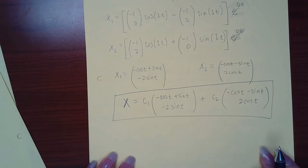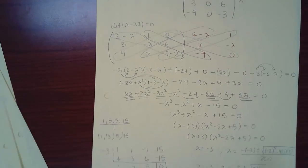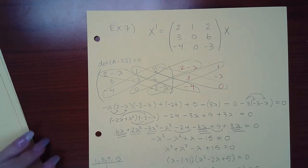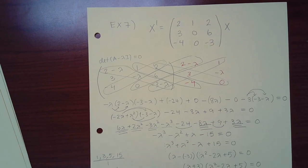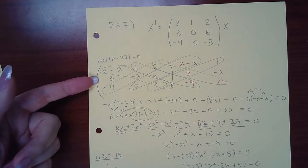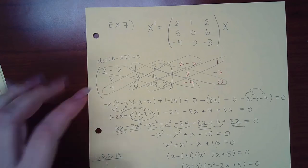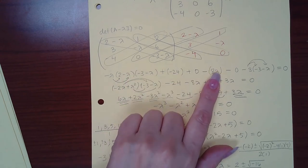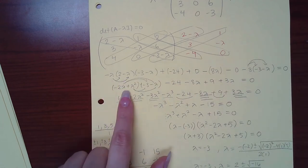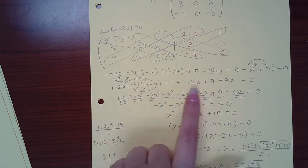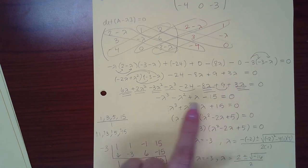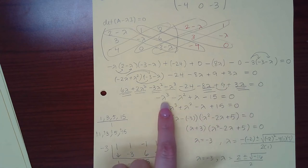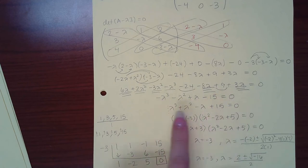The last example was the most difficult because a lot was happening. We compute the determinant of A minus lambda·I and multiply everything out since there are no common factors. After distributing and combining like terms, we get a cubic polynomial with a negative leading coefficient, so we divide by negative one to clean it up.